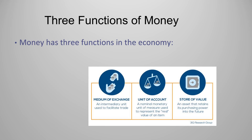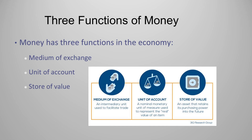Whether we're talking about the barter system, gold, or any other form of money used in the past, money has three functions. The first is medium of exchange — an intermediary unit used to facilitate trade. The second is unit of account — a nominal monetary unit of measure used to represent the real value of an item. The third is store of value — an asset that retains its purchasing power into the future.